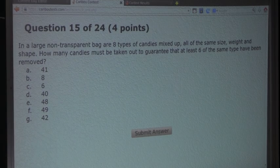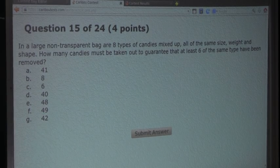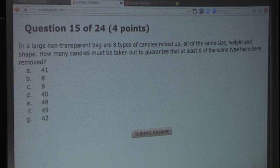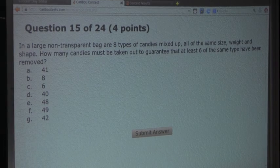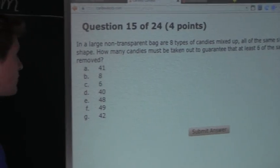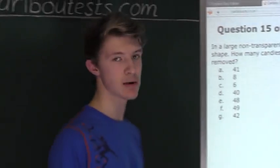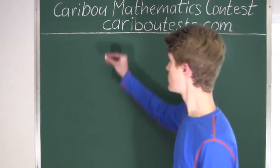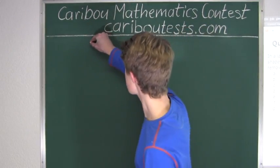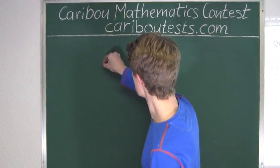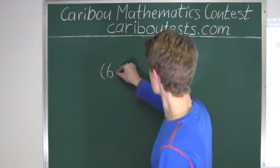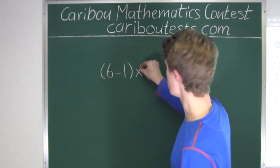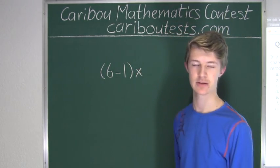Since we want that maximum number, we would need 1 less candy for all 8 different types of candies to be removed. Since you can only have 1 whole candy, it must be subtract 1. So we would have 6 minus 1, and we must multiply this by the 8 different types of candies.